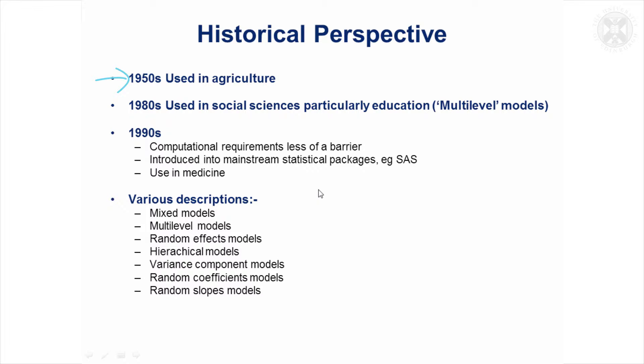And it was out of this group there was one particular person, Robin Thompson, who did a lot of work developing mixed models. He came to work at the Roslyn Institute for a while and introduced them into genetics, but that wasn't until the 1980s. Possibly there were others doing it before, but he was particularly influential.